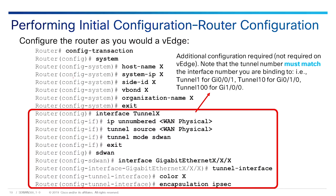We're going to do a config transaction — it looks like config T, it feels like config T, but it's a little different. We're going to go into system, check our hostname, our system IP, our site ID, the IP address of vBond just like before, and our organization name. Remember, the organization name has to match exactly — we mean it here too.